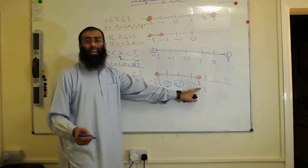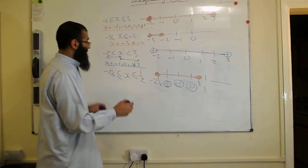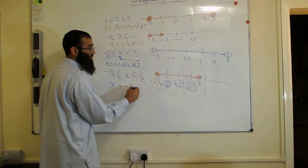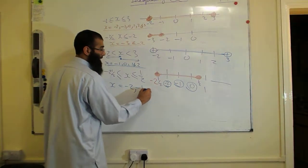Even though half is part of our answer, it's not an integer value. So we're going to say the solution set X is equal to minus 2, minus 1, and 0.